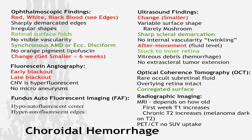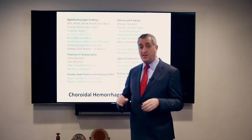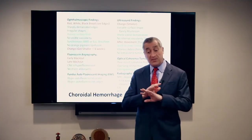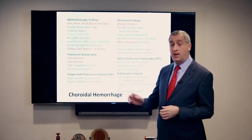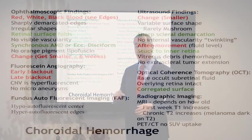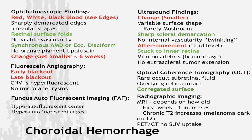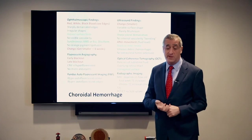Hemorrhages tend to get smaller over time, unlike melanomas and metastasis. If you have a high index of suspicion you're looking at a hemorrhage, see the patient back in three or four weeks as long as it's not sight-threatening — if the tumor is getting smaller, that extra information helps make the diagnosis. On fluorescein, you can see a blackout: bleeding in front of the choroid makes it go black — a very unusual and pathognomonic finding. There's early and late blackout throughout the entire study. You can also see sharp scleral demarcation, and blood stuck to the inner retina, which you almost never see with other tumors.